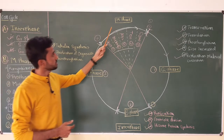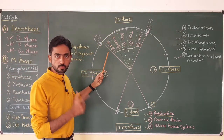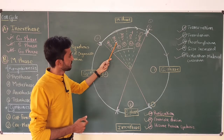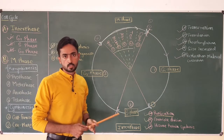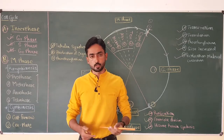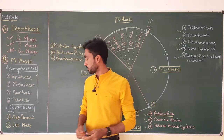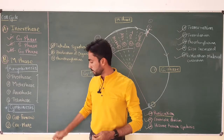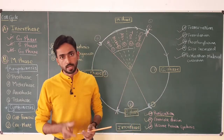The karyokinesis of the M phase has four sub-phases: prophase, metaphase, anaphase, and telophase. Cytokinesis is the actual division of the cytoplasm, which occurs by formation of a cell furrow in animal cells and cell plate formation in plant cells.